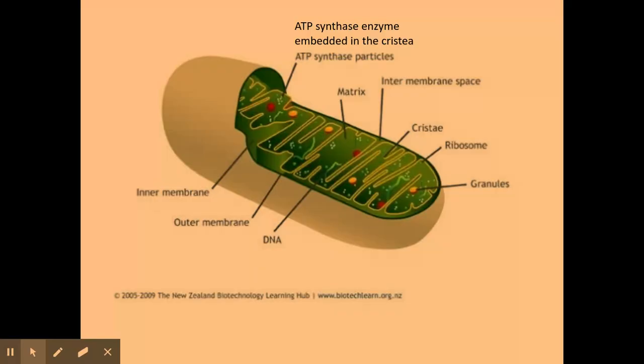We also have the matrix, and this is the fluid-like substance inside of the mitochondria. This contains enzymes that are needed for the Krebs cycle. Again, this is one of the stages of aerobic respiration.